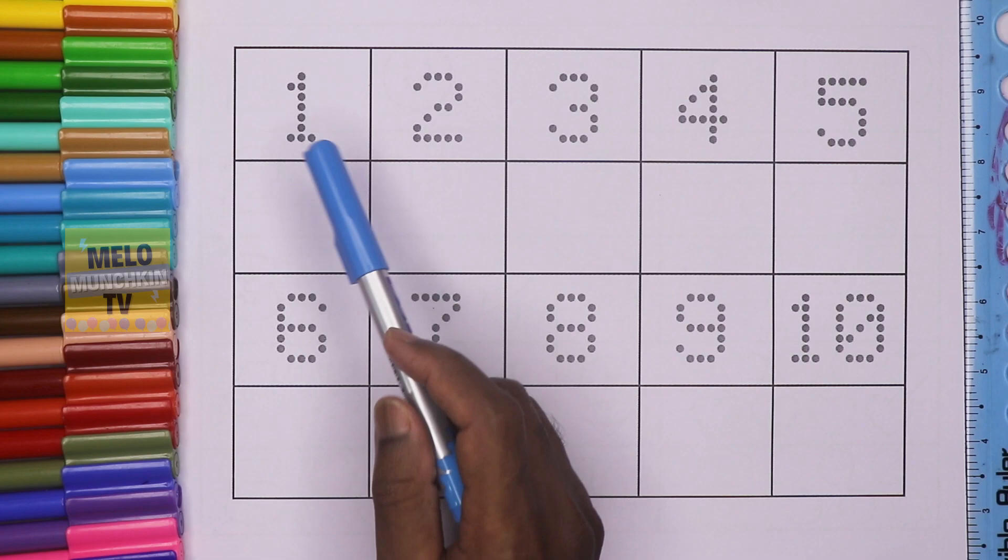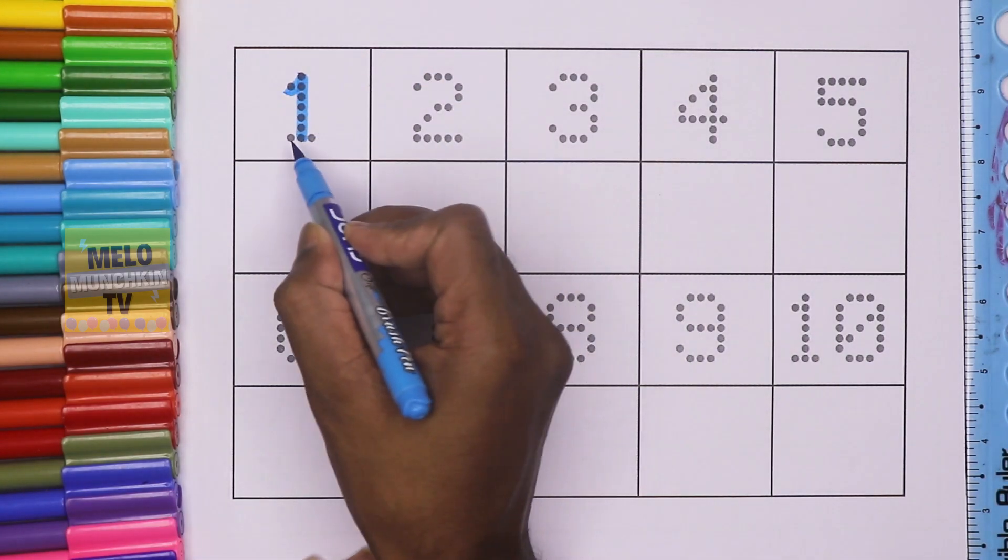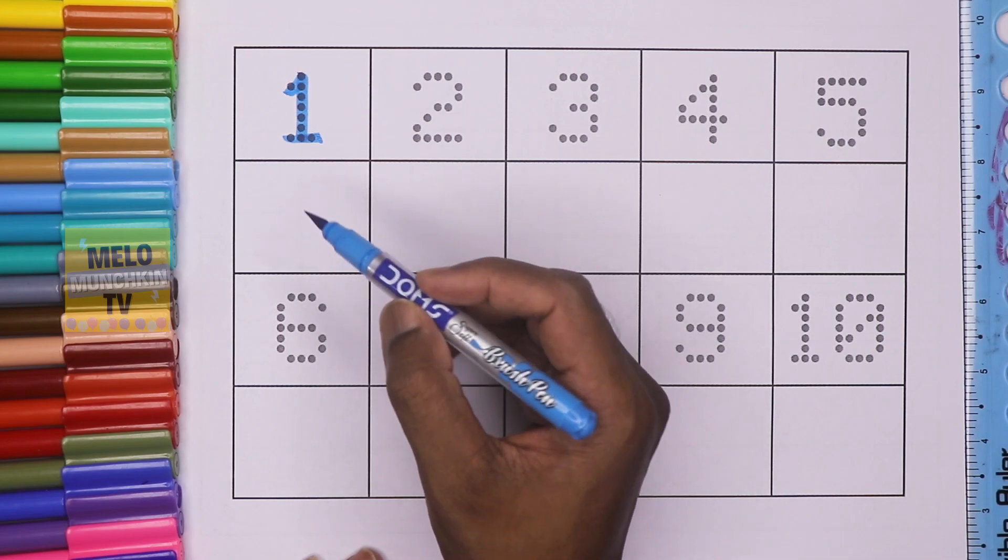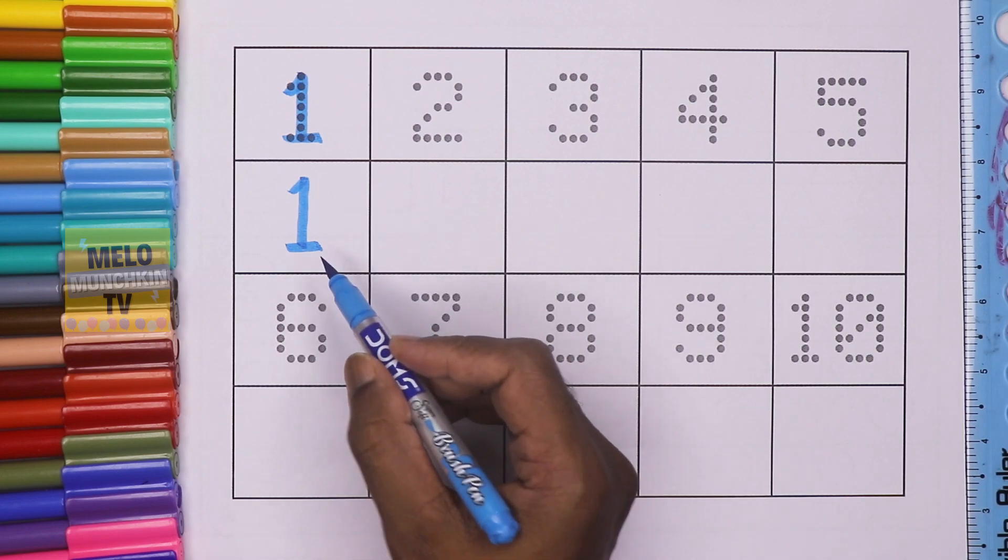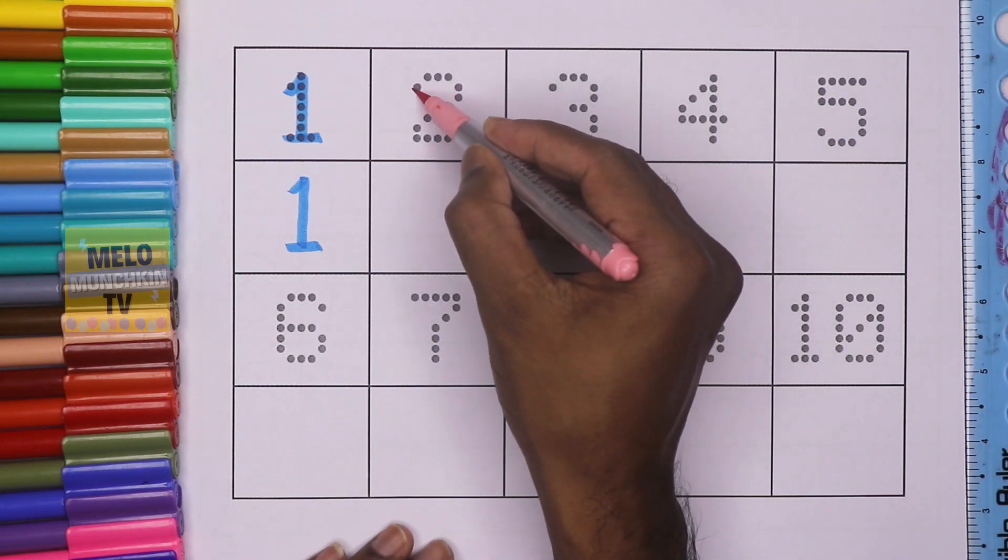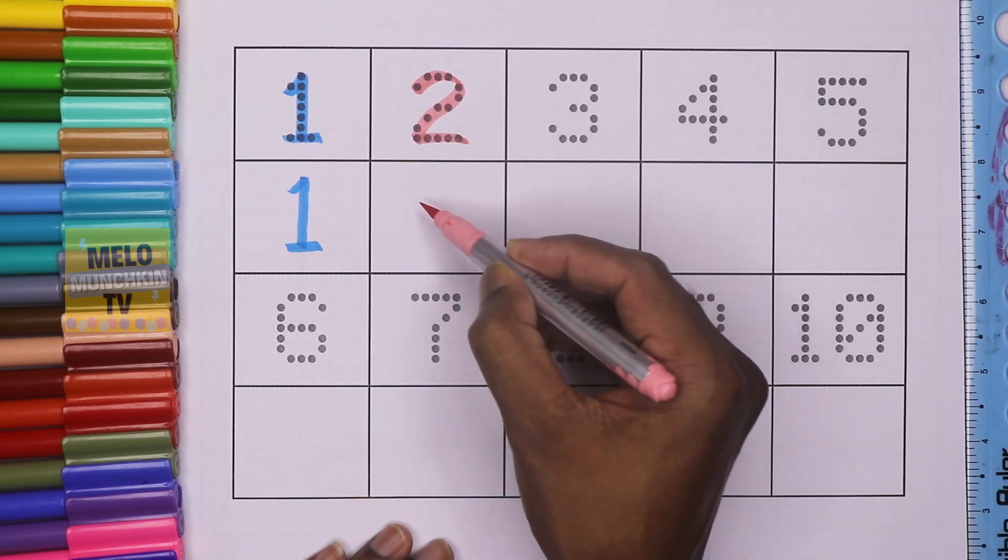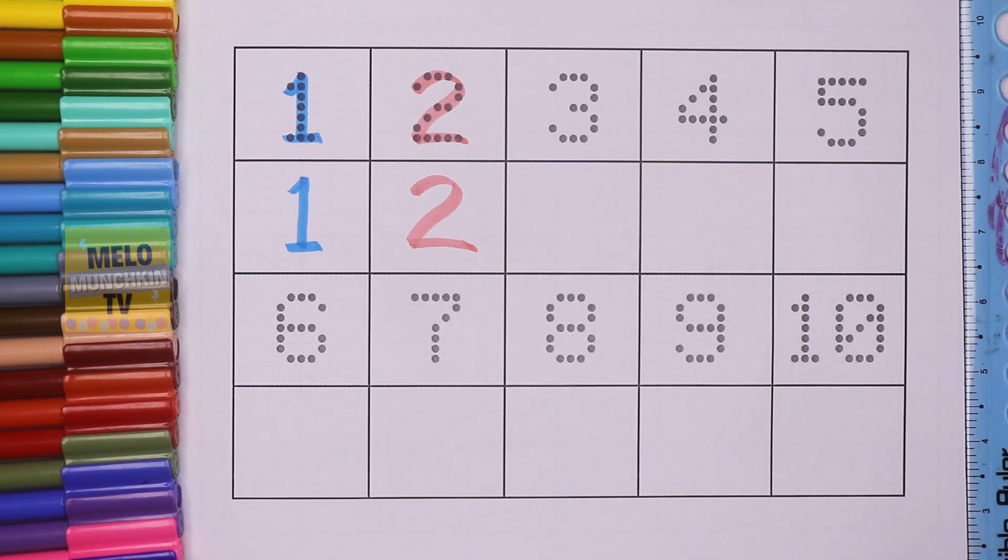This is number one: O-N-E, one, one. This is number one. This is number two: T-W-O, two, two. T-W-O, two. This is number two.